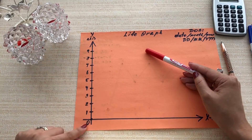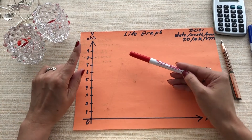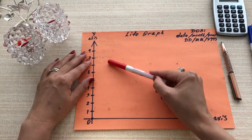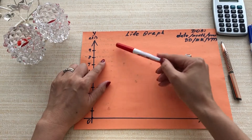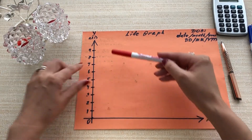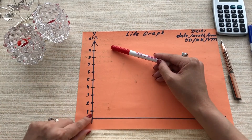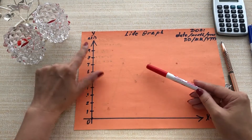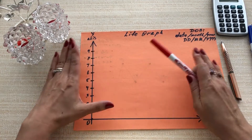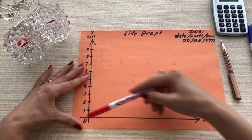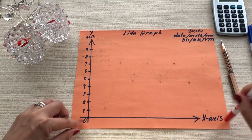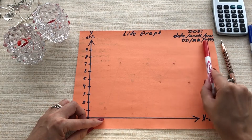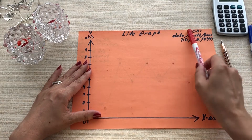In numerology, 9 is the maximum — that's all you need to know about that. So on the x-axis, I will show you later. After 9 comes 10, which is 1 and 0. When you add 1 plus 0, it becomes 1 — it means the cycle goes back to the beginning. That's why it's like a circle. In numerology 9 is the maximum. The x-axis division depends on a number we will discover from your date of birth.